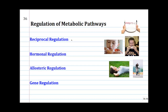The first type is reciprocal regulation, and this is important when you have opposing pathways. The best example of this is glycolysis versus gluconeogenesis.